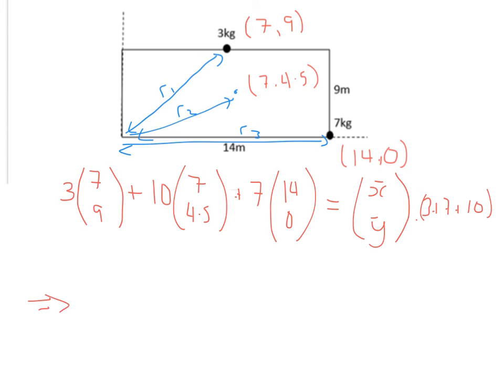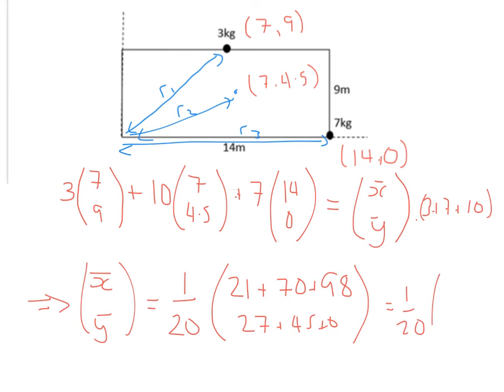So what we want to do is rearrange this to get our expression like this. So 3 plus 7 plus 10 gives you 20, so we're going to divide that across. So it's 1 over 20. 3 times 7 is 21, plus 10 times 7 is 70, plus 7 times 14 is 98. And 27 plus 45 plus 0, which gives you 1 over 20, 189 over 72.